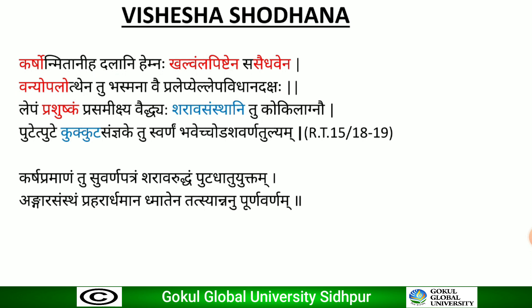For Visheshya Shodhana, as referenced in Rasa Tarangini: gold is collected in the form of thin foils (Suji Vedi Patra). Equal quantities of Saindhava Lavana and dry cowdung powder are made into a paste, applied thickly over the gold foils, and dried. These dry paste-applied foils are enclosed in a suitable Sharava Samputa and subjected to one Kukuta Puta with glowing charcoals to obtain Shuddha Swarna. This process is repeated 7 times for appropriate purification.